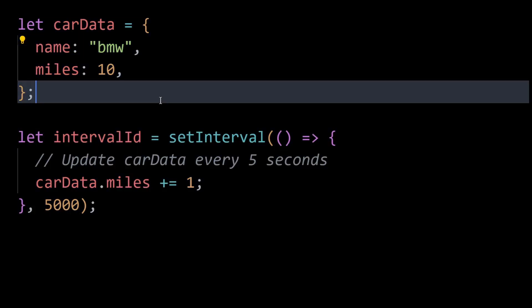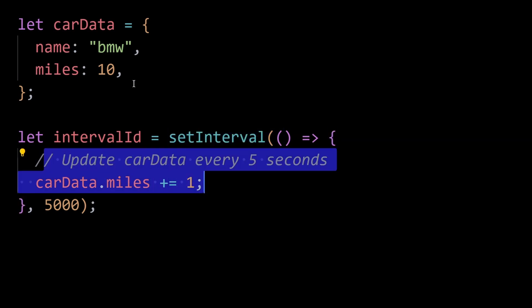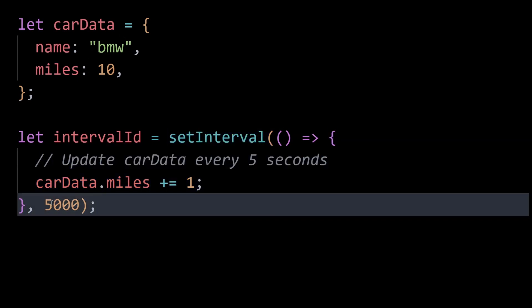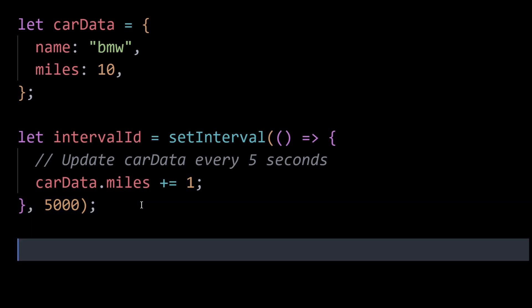Consider this example: the setInterval function updates the carData object every five seconds. If at some point you no longer need to update carData but you forget to clear the interval, it continues running. This keeps the carData object in memory, preventing it from being garbage collected.